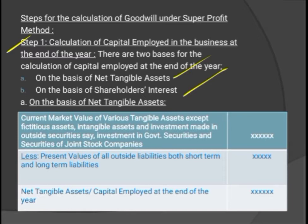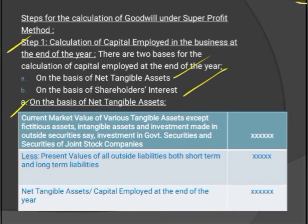If asset and liability information is not given and only shareholders' interest information is given, follow the second method. Under the net tangible assets method, we write the current market value (or present market value) of various tangible assets, excluding fictitious assets and investments in outside securities. If the present value is not available for any asset, take the book value as the present value.